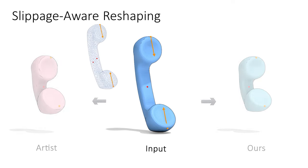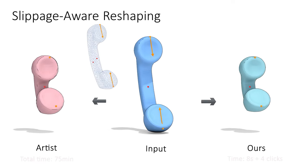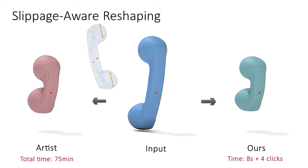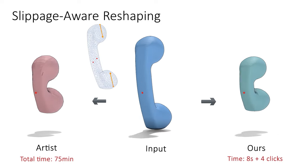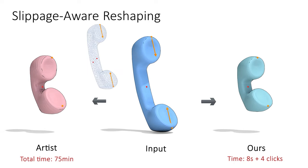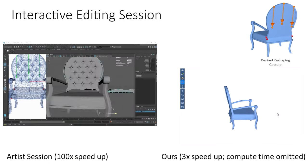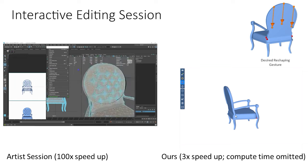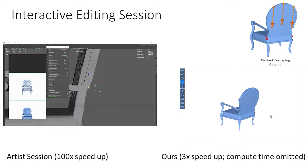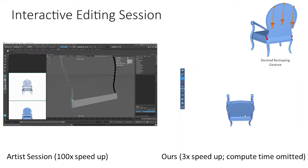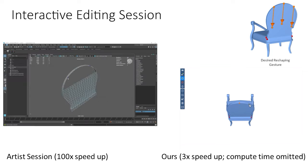Here are some results. As a reference, we show the reshaping output created by an expert — it took them 75 minutes to create. Ours was generated in under 10 seconds. Users control our method by simply placing control handles on the input shape and moving these handles. Our method then generates the reshaped outputs consistent with their gestures.